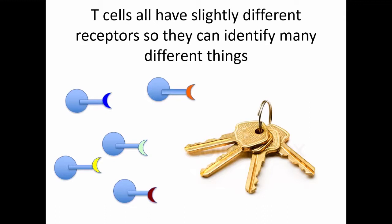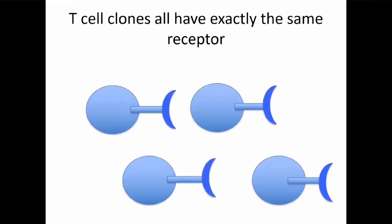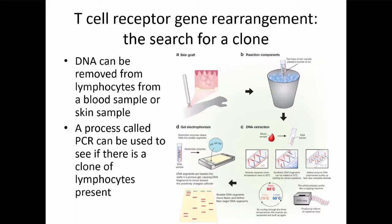All T cells have slightly different receptors. We have billions and billions of different receptors because there are so many things that need to be recognized to keep us safe and healthy — viruses, different things seen on abnormal cells. It's like a huge key chain with different keys that will all unlock a different door. The clones are all going to have the same receptor — it's like having many copies of the same key. We can look at those receptors to decide if there is a clone and how big it is by taking DNA out of the lymphocytes from skin, blood, or other tissues, using PCR to make lots of copies to look for a clone.